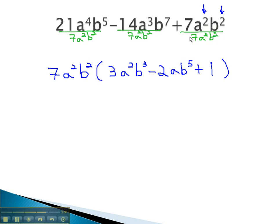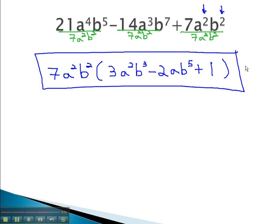Notice as we did this, just because the term divided out completely did not mean it disappeared. When things divide out, we're left with a 1 behind. This becomes our solution when we factor out the greatest common factor.